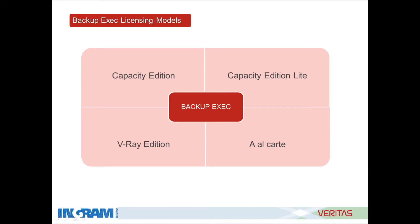The models are Capacity Edition, Capacity Edition Lite, V-Ray Edition, and Alacarte. Capacity Edition is evaluated on the total size of front-end data in terabytes and is inclusive of all features. The benefit is it is easy to manage license information rather than maintaining a list of separate agent-based licenses. Capacity Edition Lite is a smaller version with a limited feature set. V-Ray Edition is specifically designed for virtual setups and is evaluated per total number of CPUs on the host. And Alacarte is a regular model where individual features can be picked up separately.